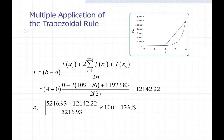Now let's do a multiple application of the trapezoidal rule. The first application would be done in the region between 0 and 2, and the second in the next region. We've reduced the error in each portion somewhat, but there's still error present. Evaluating with (4 minus 0) divided by 2 and N equal to 2, using the values at 0, 1, and 2, we get a value of just over 12,000, which gives us an error of 0.133%.